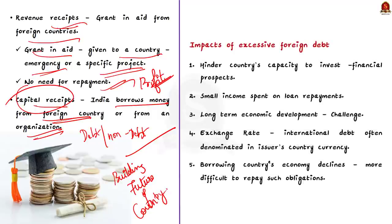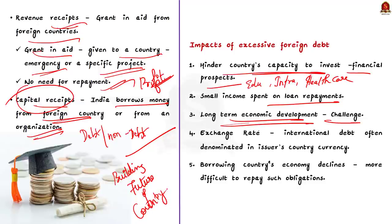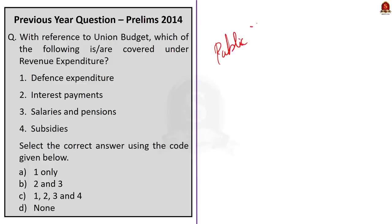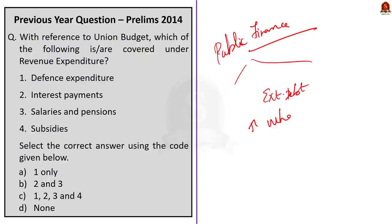Excessive foreign debt hinders a country's capacity to invest in education, infrastructure, or healthcare because small income is spent on loan repayment — making it a long-term challenge to economic development. The biggest issue is the exchange rate, since international debt is often denominated in the issuer's currency and not the borrower's. If the borrowing country's economy declines, it becomes significantly more difficult to repay such obligations. That's all about external debt and public finance.